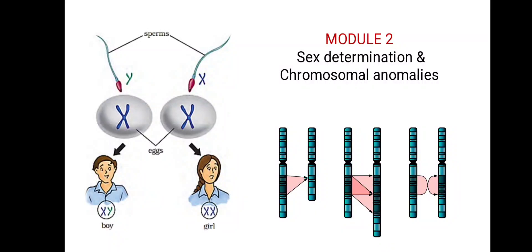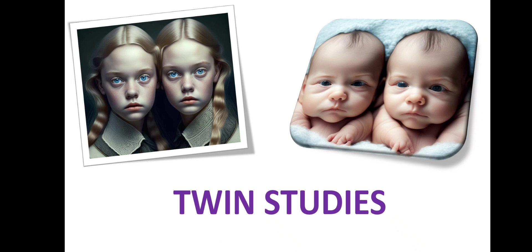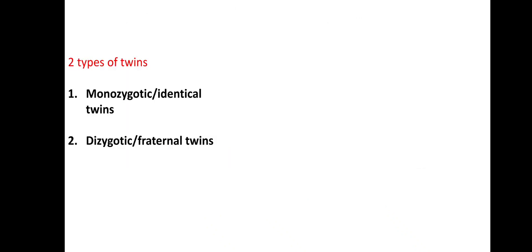Hi everyone, today we are going to discuss about twins. This is our next topic. Mainly, two types of twins are: the first one is monozygotic or identical twins, and the second one is dizygotic or fraternal twins.